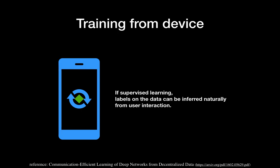You may have a question about how each device can train with local data if it is supervised learning. That's a great question. We need labels for the data. In supervised learning, the labels on the data can be inferred naturally from user interactions. If that's not possible, you may have some difficulty with federated learning.